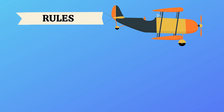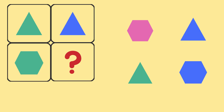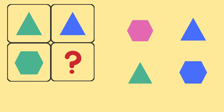Let's look into the rules. Rule 1: Color. In this 2x2 matrix, we have 3 pictures and a question mark. We need to find the figure that goes in the box with a question mark. The first figure is a green triangle and the second figure is a blue triangle. Both figures have the same shape, but the color is different. In the bottom figure, we have a green hexagon. Applying the same rule, the shape should be the same — a hexagon — and the color should be blue. So the answer is blue hexagon.